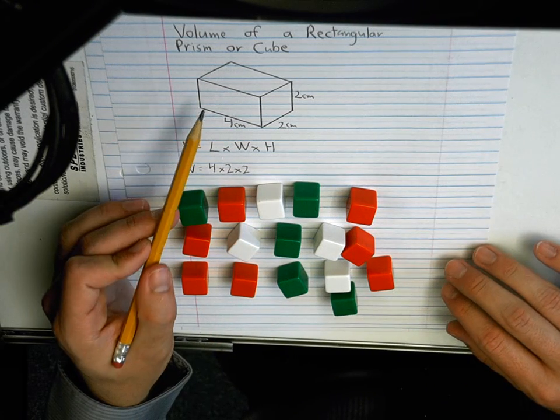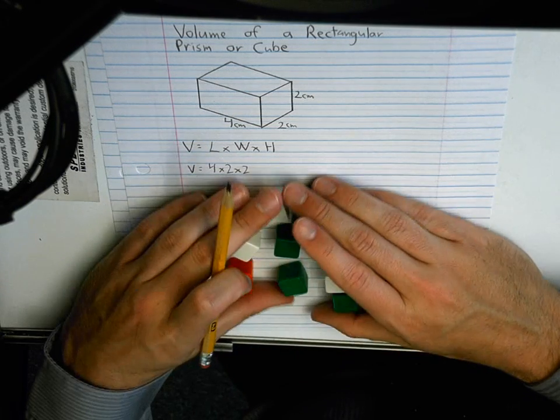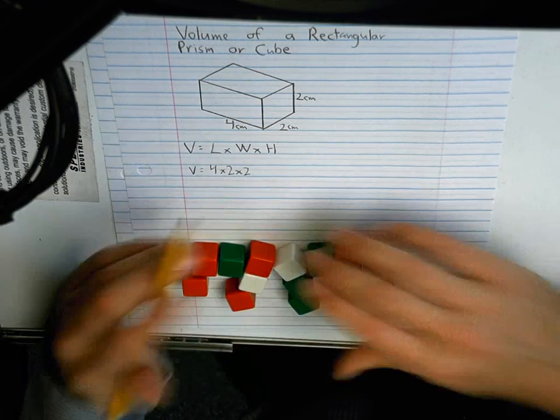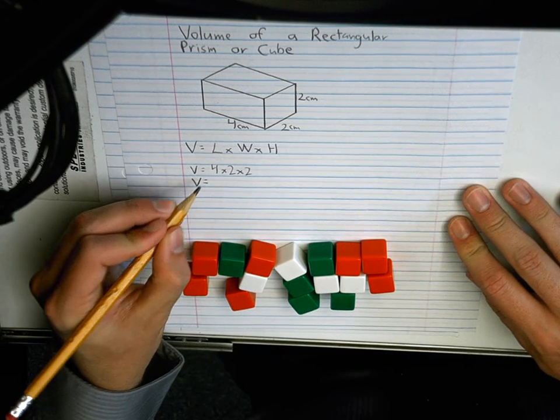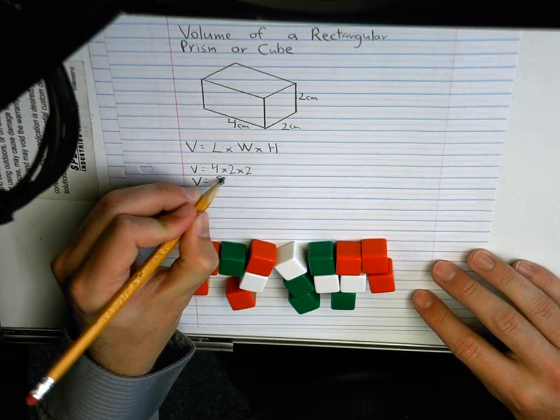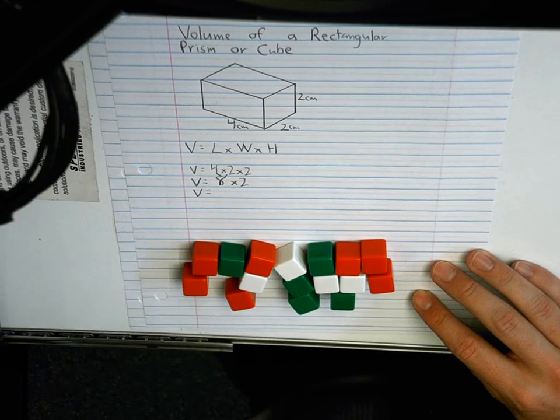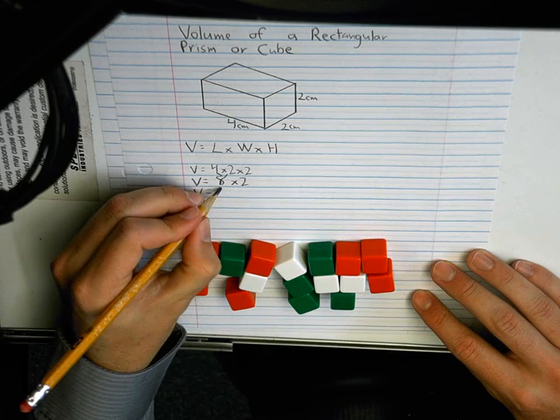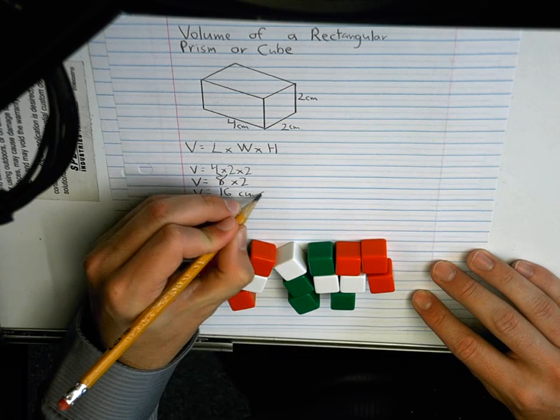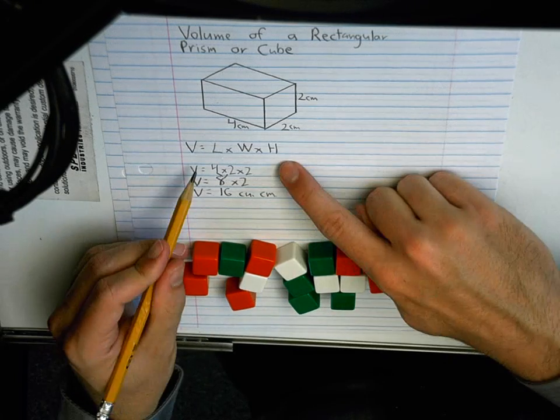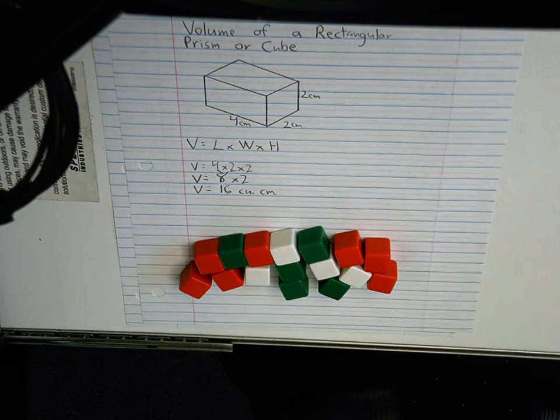Let's use the formula and see if math is true. What's four times two? Eight. Eight times two. What's eight times two equal? Just sixteen. Sixteen cubic centimeters. Was our answer using the formula the same as when we built that with the blocks? Sure was.